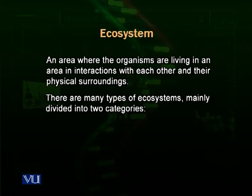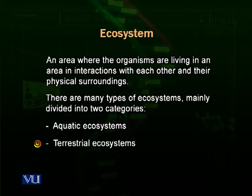Biotic factors are the living organisms which are interacting with each other and also interacting with their physical and chemical surroundings. There are many kinds of ecosystems, and we widely divide them into two major categories: aquatic ecosystems and terrestrial ecosystems. Aquatic ecosystems are present inside water, while terrestrial ecosystems are present on land. Organisms in aquatic ecosystems interact with each other and with water and other physical surroundings, while organisms in terrestrial ecosystems interact with each other and with their physical and chemical surroundings.